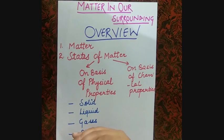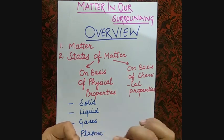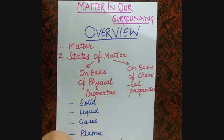Welcome to ACIP Science, hope you are doing well. This is the third part of 'Matter in Our Surroundings', Chemistry Chapter 1, Class 9. If you didn't watch the previous parts, watch them too. So let's begin with this part and see the overview of the structure first.